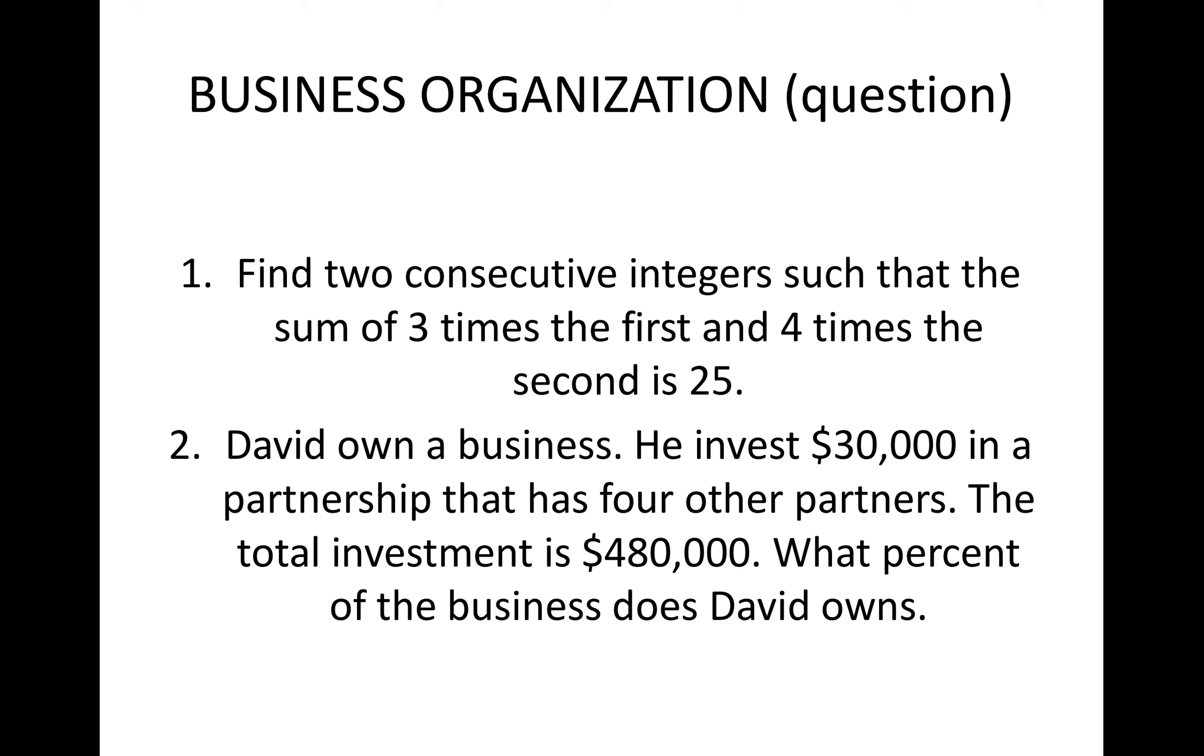Let's take a look at the first one. This is just a warm-up example: find two consecutive integers such that the sum of three times the first and four times the second is 25. That's the first one.